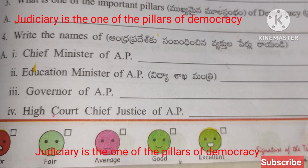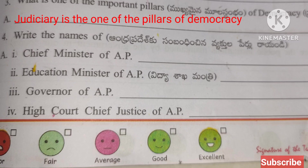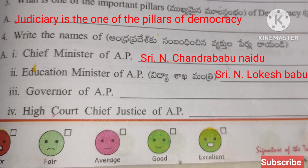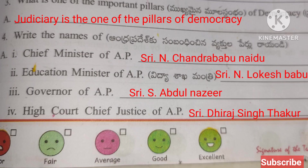Write the names — Chief Minister of AP: Sri N. Chandrababu Naidu. Education Minister of AP: Sri N. Lokesh Babu. Governor of AP: Sri S. Abdul Nazeer. High Court Chief Justice of AP: AP Dheeraj Singh Thakur.